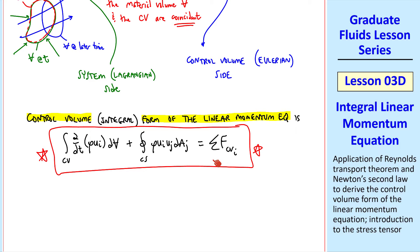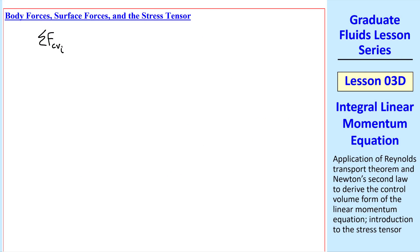Now we need to look at this term, the sum of all forces acting on the control volume. We'll split sigma fcvi into two parts: body forces that act on the whole volume, for example gravity forces, magnetic forces, etc., plus surface forces, for example pressure and viscous forces. Note that we're taking our control volume as the fluid, so these are the only forces that act. We're not cutting through any struts or cables or anything like that, but if our control volume would include those kinds of forces, we would add those. These two are only for the fluid.